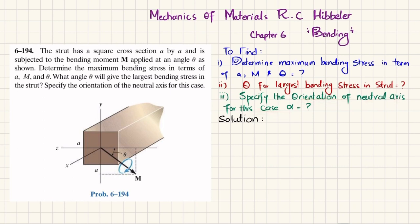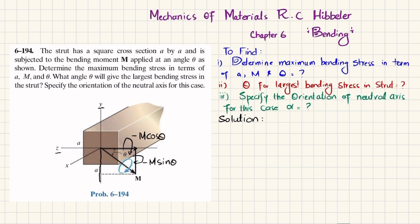The moment is applied at angle theta from the axis. Resolving it into two components: the first component is M cosθ, which is negative because it is opposite to the z-axis. The vertical component is negative M sinθ because it is opposite to the y-axis.